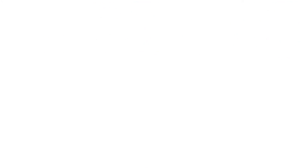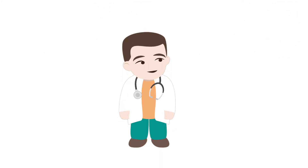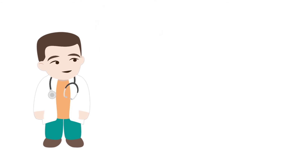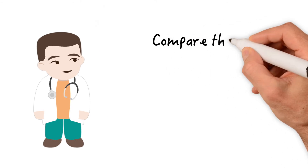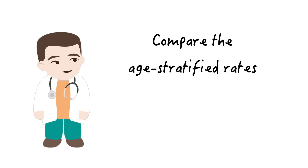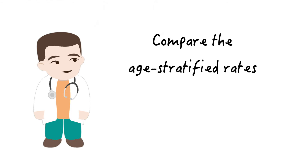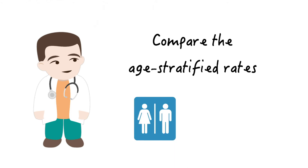So the key learning of this lesson is: whenever you want to get a quick grasp of the effect of age on your rates, compare the age-stratified rates. In fact, you could do this for any potential confounder. If you thought that gender was confounding your overall rates, compare the gender-stratified rates. If you thought that income confounded your rates, look at the income-stratified rates, and so forth.